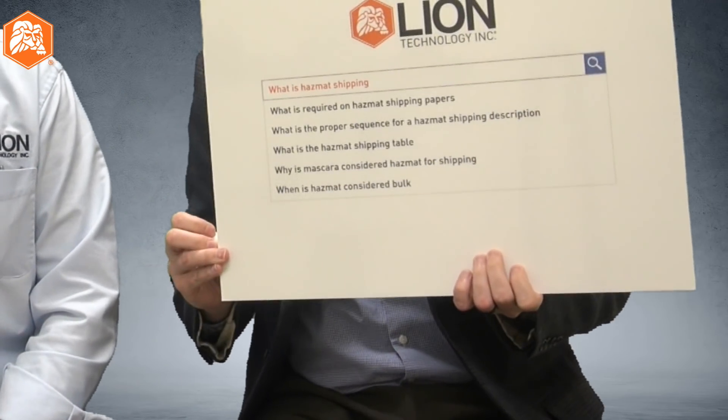When is HAZMAT considered bulk? For liquids, if your single package of hazardous material is larger than 119 gallons, that's considered a bulk package. This is important because bulk packages have one set of regulations and rules for packaging and shipping, while non-bulk packages have a different set of rules. For liquids, the threshold starts at 119 gallons and goes up. Solids and gases have a similar but slightly different standard that you'd want to check out.